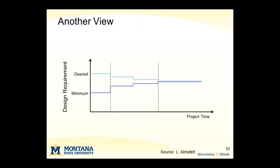That might look a little bit like this: with any given specification, you might start with a desired and a minimum acceptable requirement, and then as you learn more, you gradually narrow in on what that final specification would be.